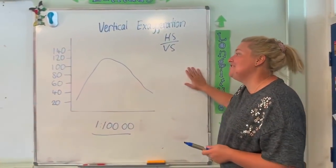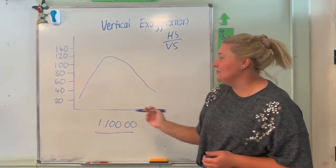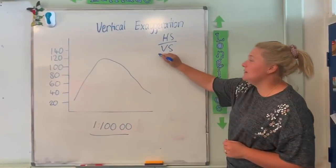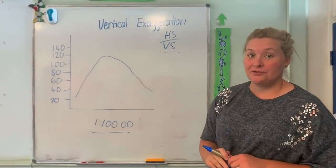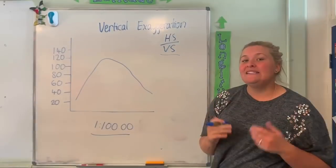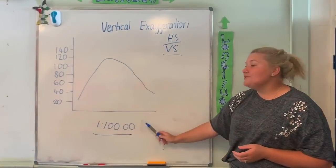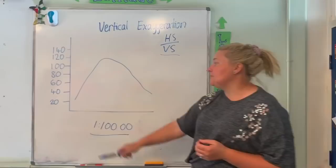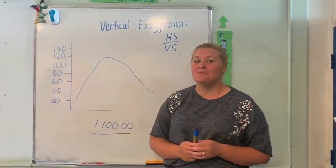Okay guys, we have a vertical exaggeration question here, which is a fake cross section that we've created. We're going to use this equation: horizontal scale over vertical scale. Basically what we're asking is, what is 1 cm equal to on our horizontal scale? Then what is 1 cm equal to on our vertical scale? And we need to get them into the same units.